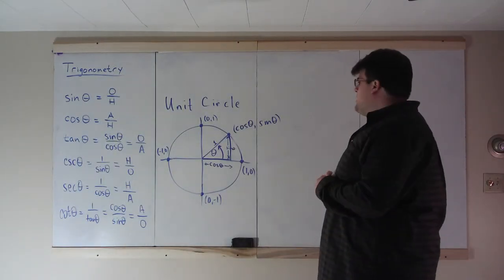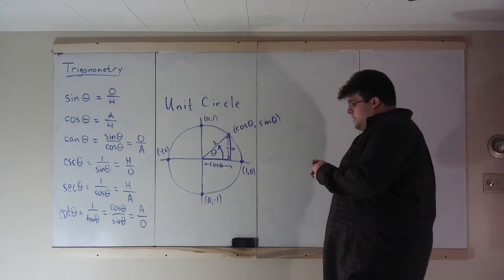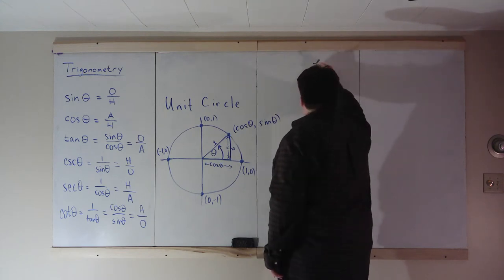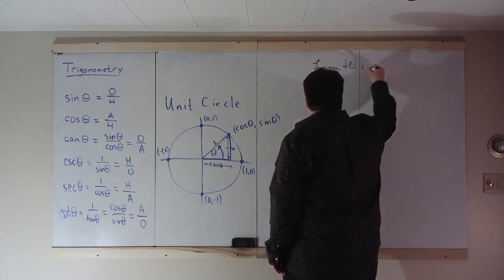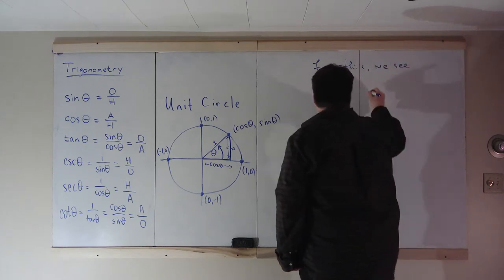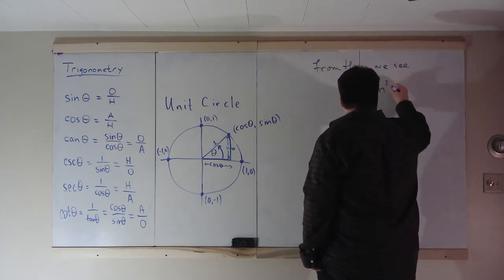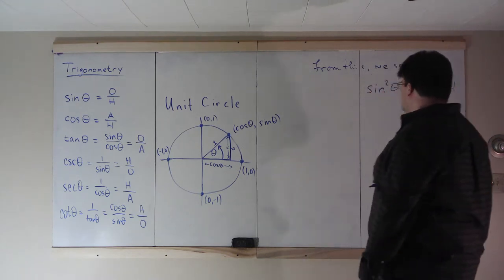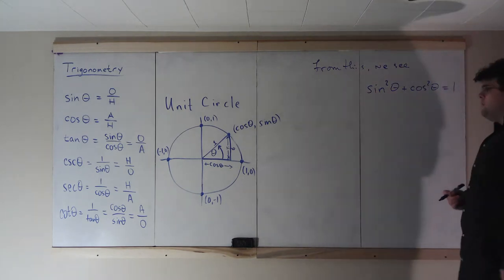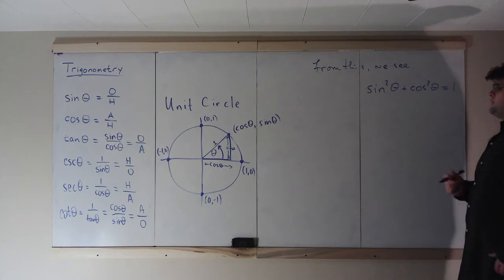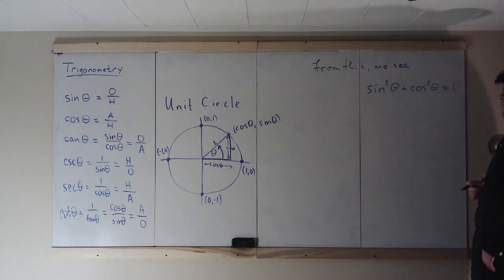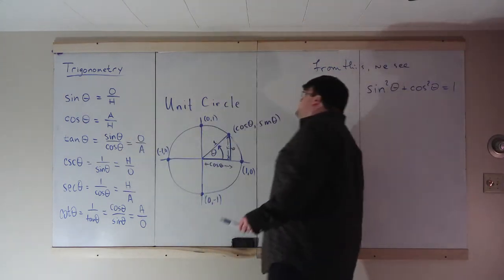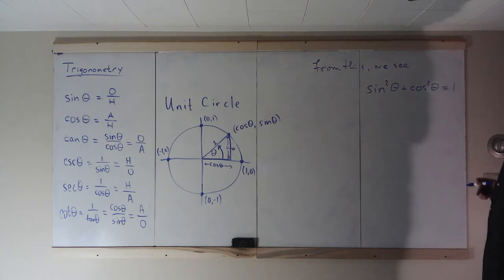From this unit circle, we immediately see that sine squared of theta plus cosine squared of theta equals 1, because the circle is defined as x² + y² = 1. Here, sine squared plus cosine squared equals 1. We could have also derived this using the Pythagorean theorem in that triangle.